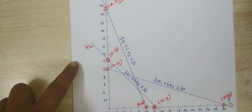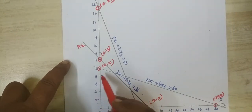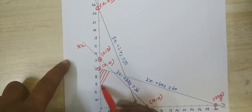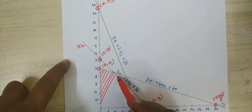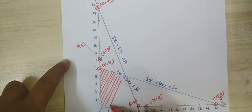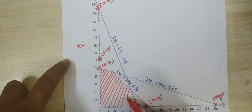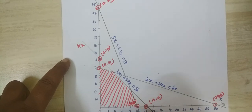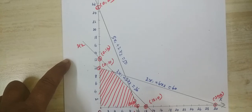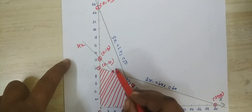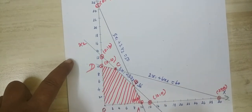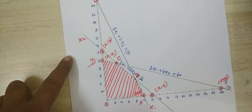The feasible region is where the three equations intersect. This is the feasible region. The corner points are labeled as point A, point B, point C, and point D. The value at origin O is also noted.